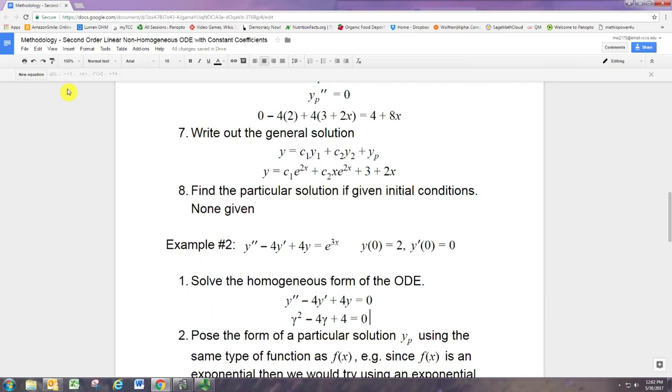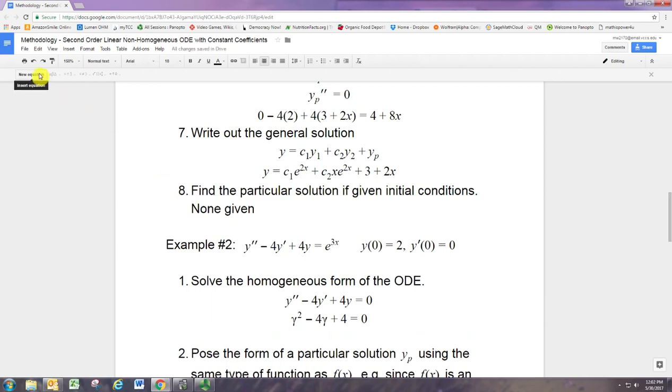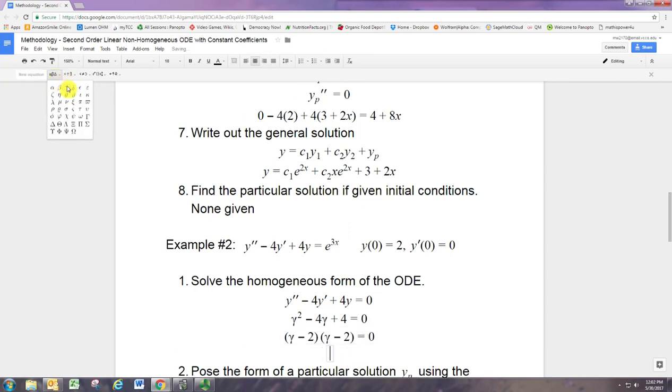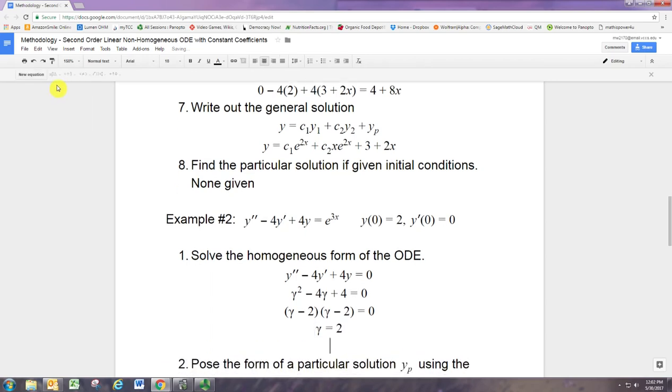And this factors. And it factors the same as the other one. So we're not going to challenge ourselves a whole lot with different cases for these solutions. But you know how to do this from the previous methodology. This is a repeated root. Gamma minus 2 is gamma minus 2. So gamma is going to be 2. So that gives us two solutions: e to the 2x and xe to the 2x.